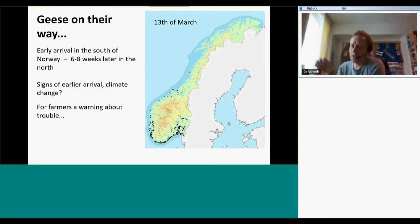Now as we speak, 20th of March, the geese are on their way to Norway. This map shows how it could be on 13th of March where greylag geese has arrived in the south of Norway and up to Helgelandskysten in the middle of Norway. The greylag geese seems to arrive earlier and earlier every year, and researchers speculate that this might be caused by climate change. For farmers it's a warning about trouble.